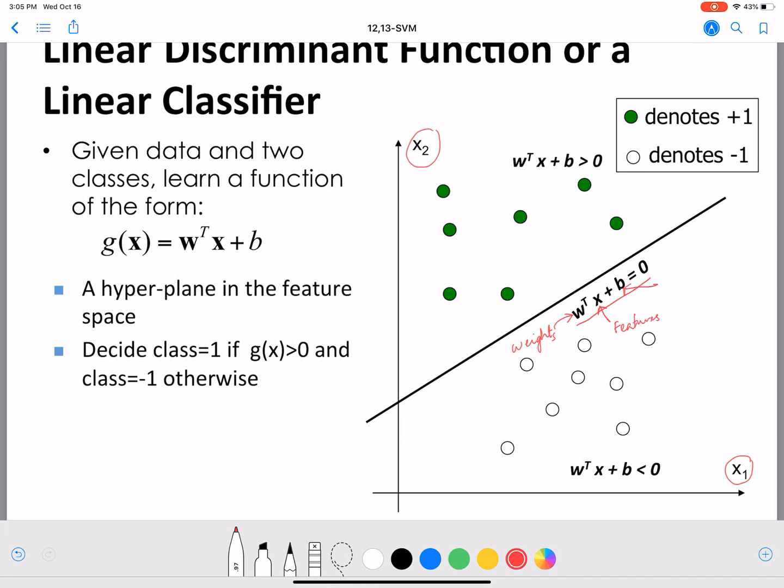B is the bias term which gives our line a bit of flexibility. The bias term is nothing but the intercept. As in any line, the y-intercept is given by B. Here the y-axis corresponds to the feature x2 and this intercept is B, so B gives us flexibility.